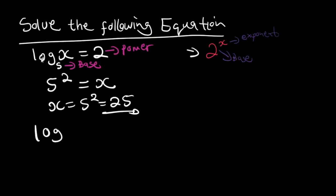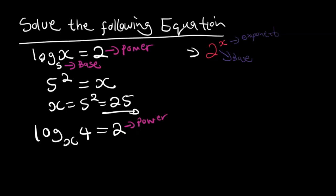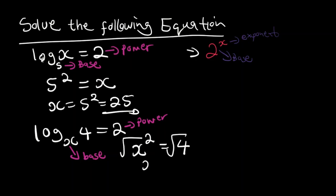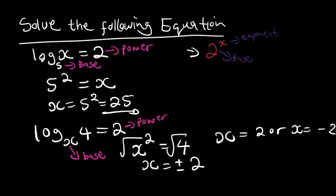Now say you have log of base X of 4 equals 2. We know that 2 is our power and X is our base. To solve this equation, we start with our base: X to the power 2 equals 4. To solve for X, we take the square root of both sides, so X equals plus or minus 2. But because X is your base in the logs, it cannot be negative. So X equals 2 is your answer.